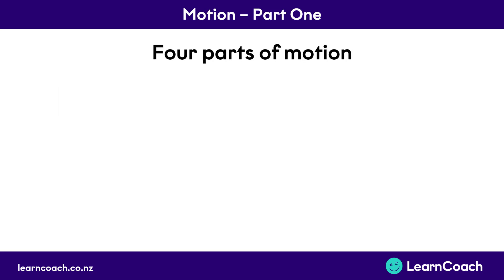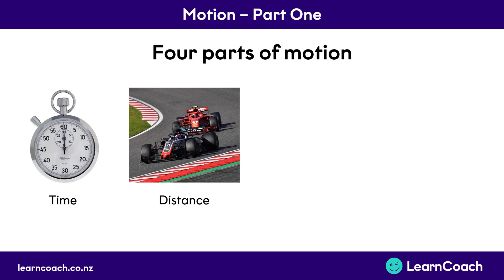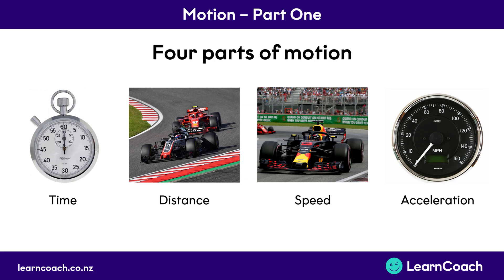Motion can be described in four different ways. The first is time — so how long has the car been driving for? The second is distance, so we might be talking about how far the car has gone around the track. The third is speed, so how fast or how slow is the car moving? And the fourth is acceleration, and that's the change in speed. So a car might come around a corner nice and slow, and then speed up down the final stretch — this is an example of acceleration.